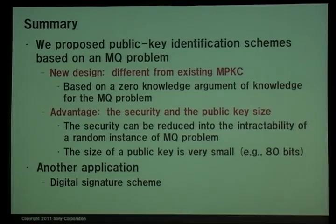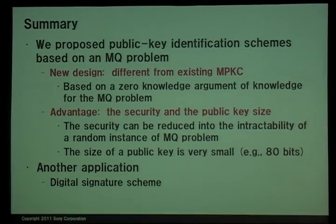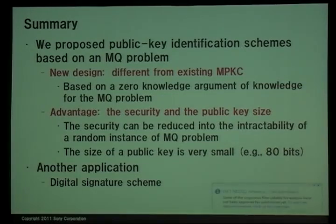Finally, we summarize this work. We propose public key identification schemes based on the MQ problem through a new design, which is totally different from existing MPKC. Technically, the design is based on a zero-knowledge argument of knowledge for the MQ problem. The advantages of our scheme are the security and the public key size. The security can be reduced to the intractability of a random instance of the MQ problem, and the size of a public key is very small — for example, only 80-bit for 80-bit security. As another application, a digital signature scheme based on the MQ problem can also be realized. Thank you for your attention.